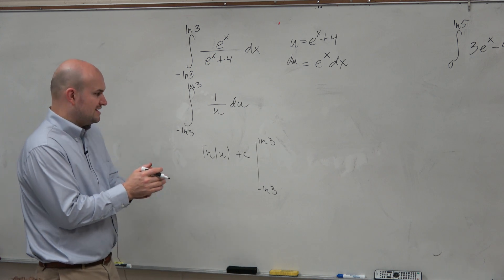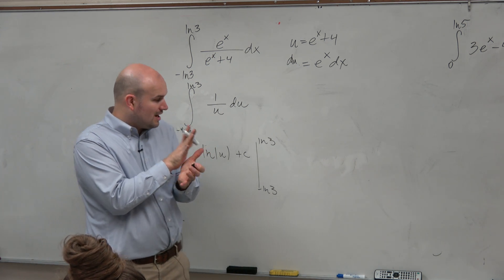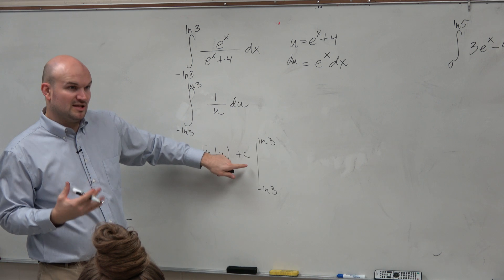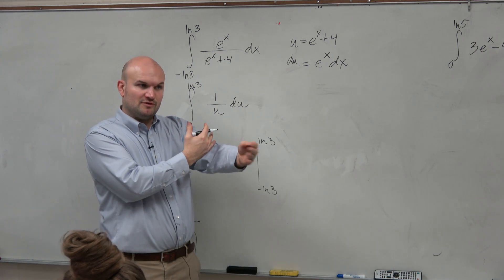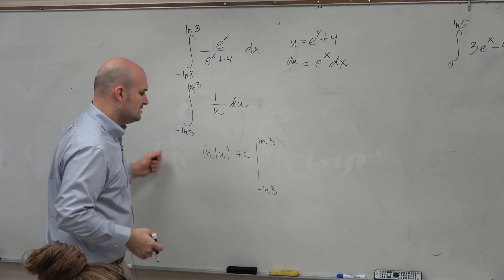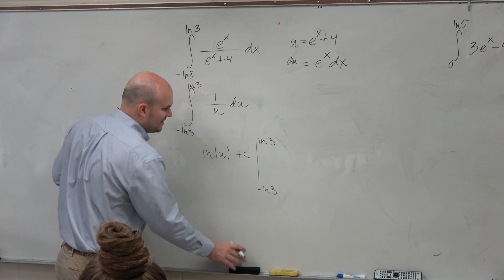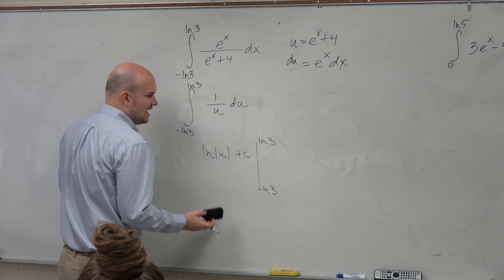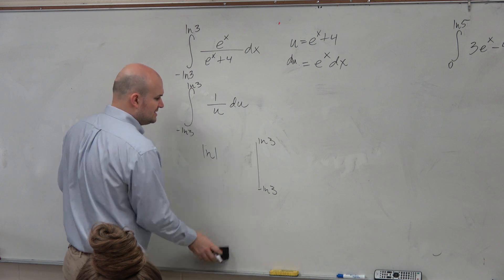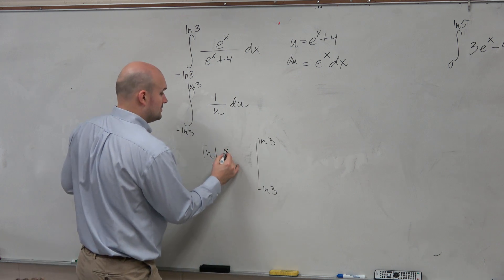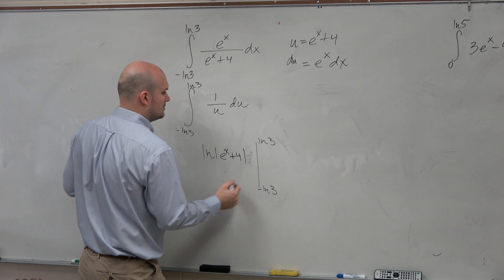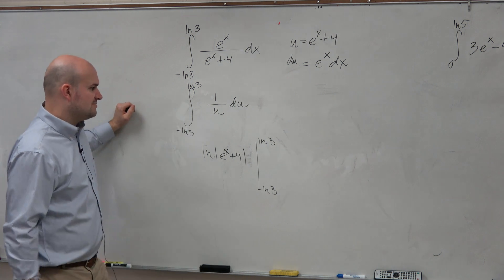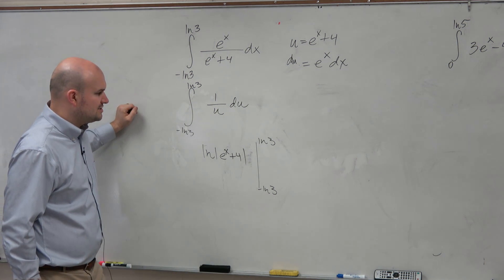And then we can integrate that from ln of 3 to negative ln of 3. However, what we mentioned is when we're using the fundamental theorem of calculus, we don't really need to use this plus c, because when we subtract our two intervals, that c subtracts out. So what I can do is I can just simplify this. And rather than writing u, we know what u is, which is e to the x. So I'm just going to rewrite this with e to the x, and then evaluate this from ln of 3 to negative ln of 3.